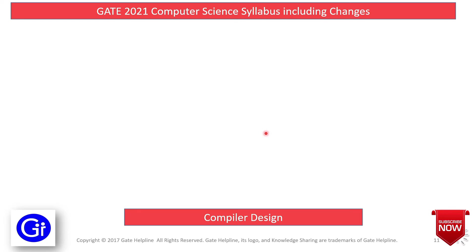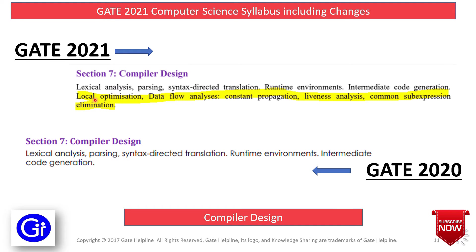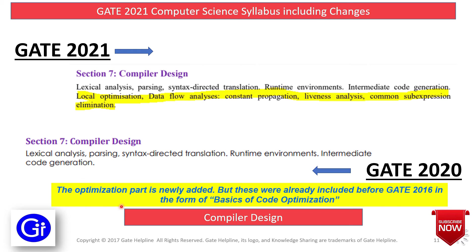The next subject is Compiler Design. The GATE 2020 syllabus comprises Lexical Analysis, Parsing, Syntax-Directed Translation, Runtime Environments, and Intermediate Code Generation. In GATE 2021, the additions are Local Optimization, Data Flow Analysis, Constant Propagation, Liveness Analysis, and Common Sub-Expression Elimination. The Optimization part is newly added, though these topics were already included before GATE 2016 in the form of Basics of Code Optimization.